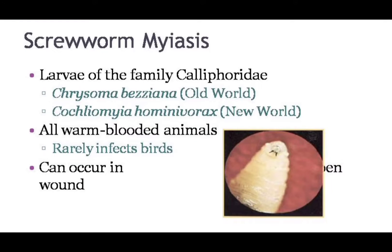Skewworm Myasis is caused by the larvae of the family Caliphorides. Chrysomia besiana, which is also known as Old World Skewworm, and Cochleomia hominoworex, also known as New World Skewworm. The New World Skewworm is found only in the Western Hemisphere, particularly in the tropical regions, while the Old World Skewworm is found only in the Eastern Hemisphere.